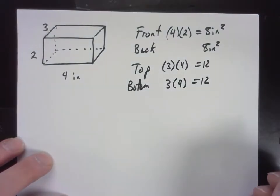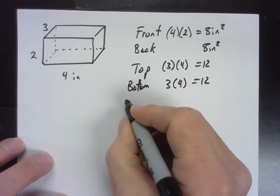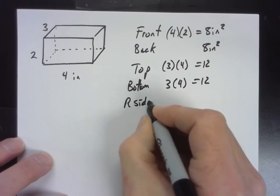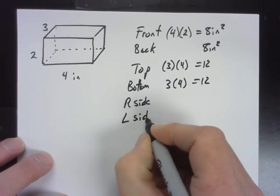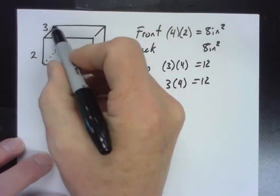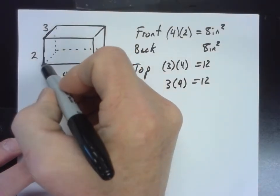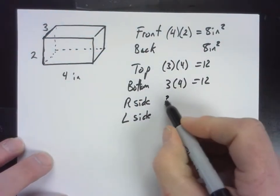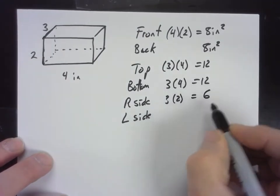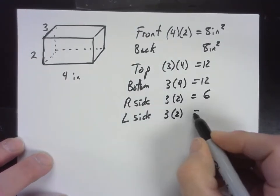And then I guess we have, we have a right side, and we have a left side, don't we? Okay, so three by two. Three by two. Okay, three by two. So six. Three by two, that's six.